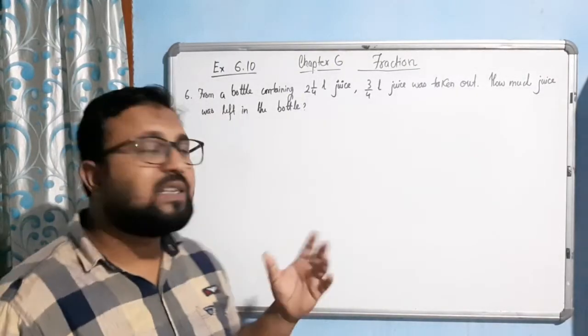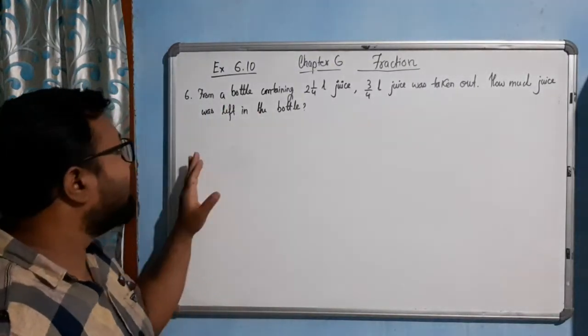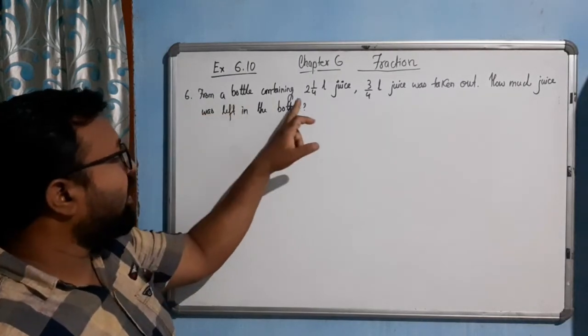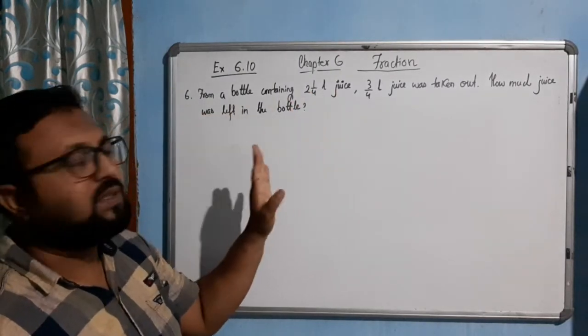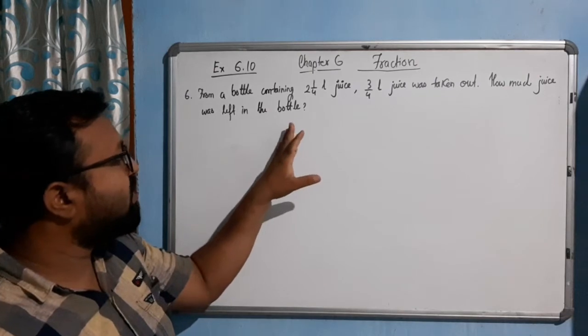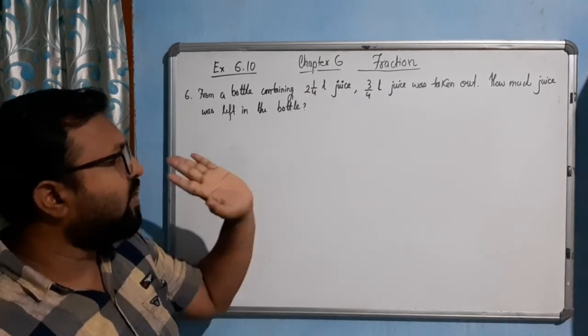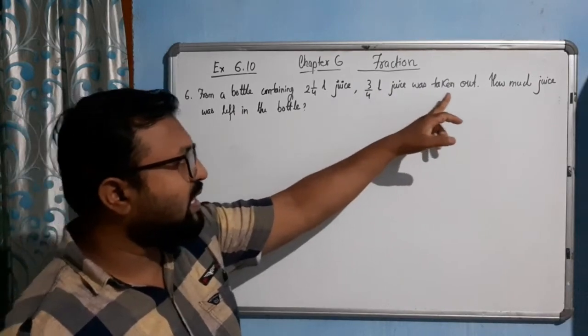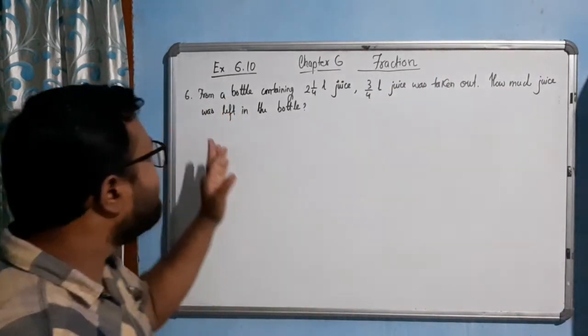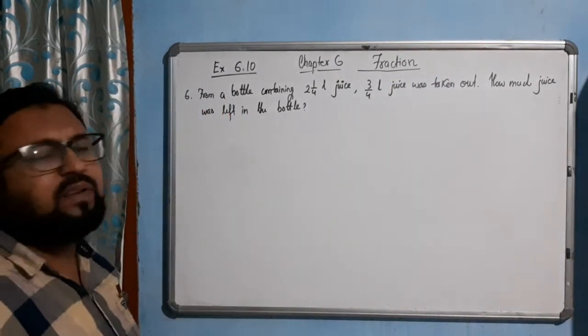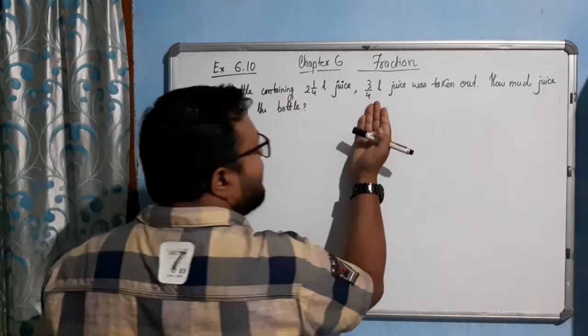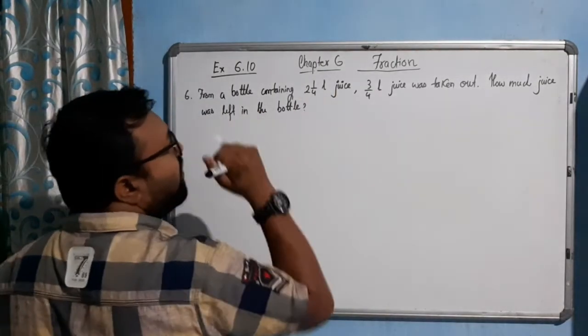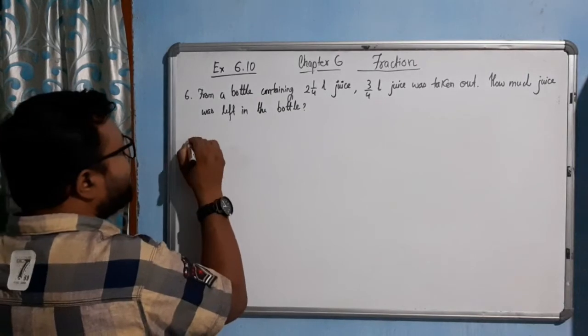Hello students, now come to the last question of this exercise, question number 6. From a bottle containing 2 1/4 liter juice, how much amount of juice is there? 2 1/4 liter juice. From there, 3/4 liter juice was taken out, so how much juice was left in the bottle? It's very simple, we will subtract this amount of juice from this amount of juice.